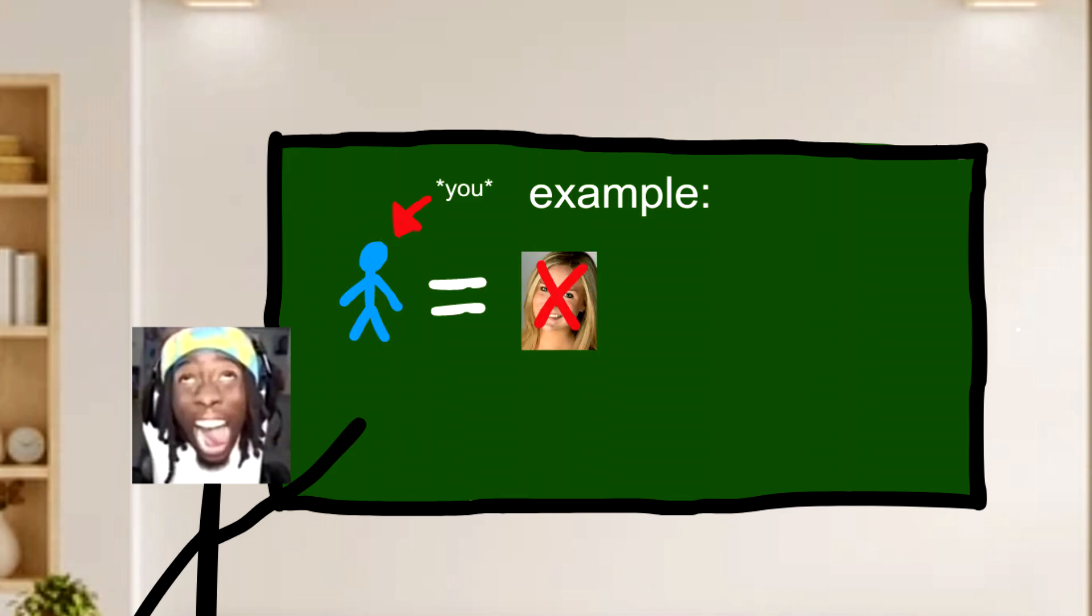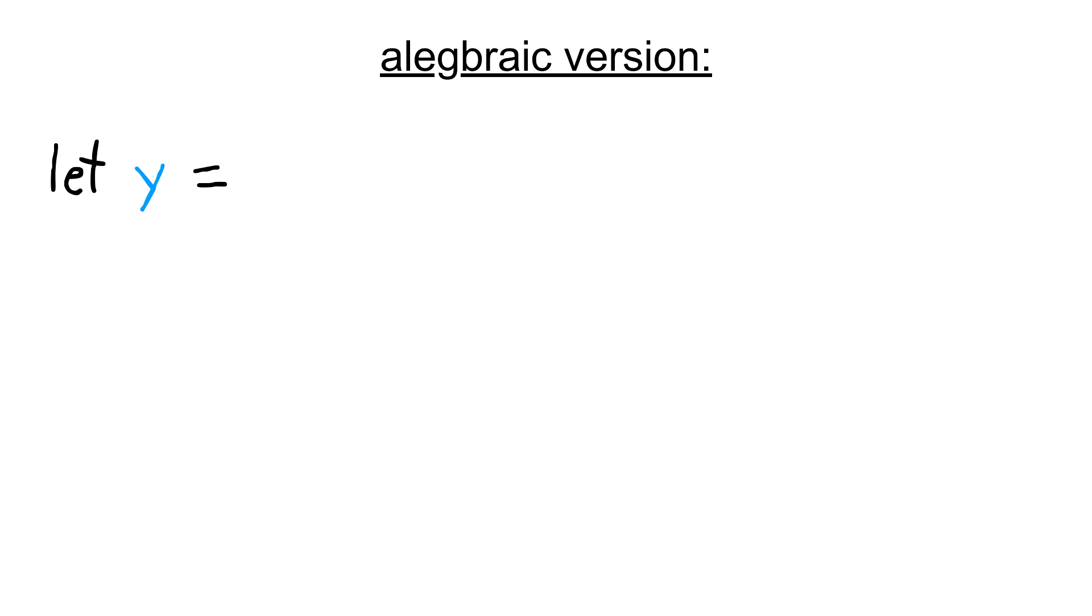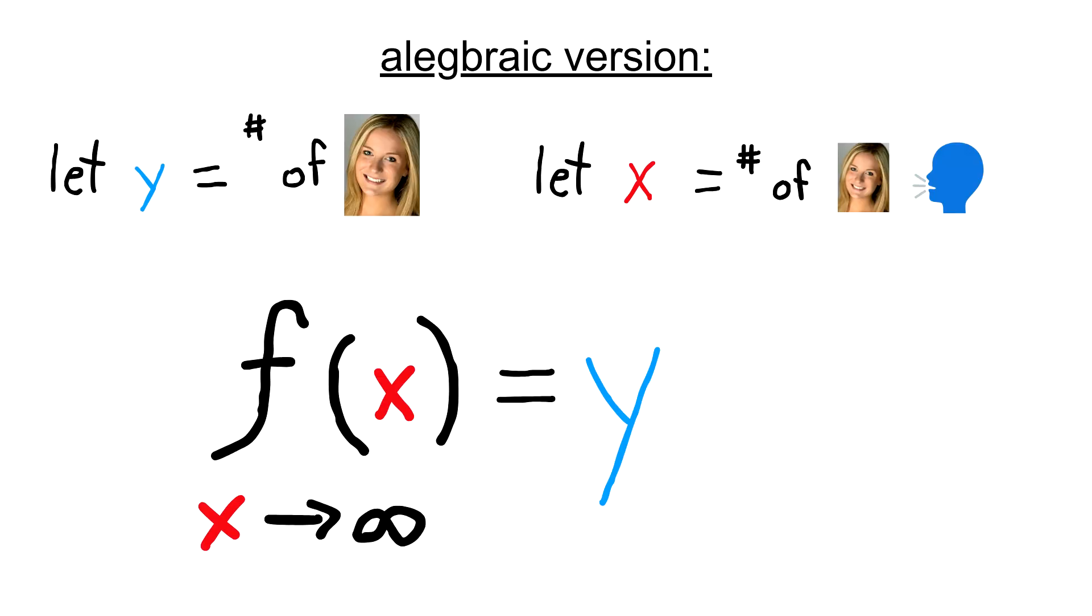You have no b****s. Every time you talk to a girl, you still have no b****s. How can we algebraically model this? Well, let y equal the number of b****s you will have, and let x equal the number of girls you've talked to. Now, as x approaches infinity, y will remain zero.